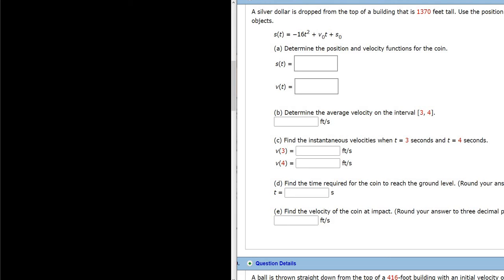Okay, so we have a word problem. A silver dollar is dropped from the top of a building that is 1,370 feet tall. Let's go ahead and draw a little picture of the building. So here's our building, and it is 1,370 feet tall.